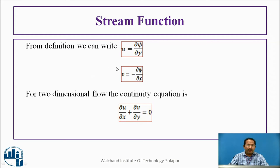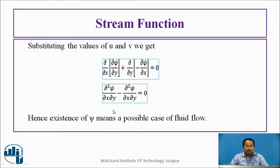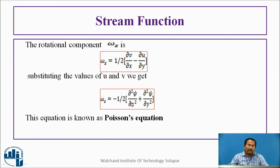From the definition, it is not a negative derivative — it is direct. That is, u = ∂ψ/∂y and v = −∂ψ/∂x. We substitute these values into the two-dimensional continuity equation: ∂u/∂x + ∂v/∂y = 0. Substituting u and v in terms of ψ, we get: ∂²ψ/∂x∂y − ∂²ψ/∂x∂y = 0. The existence of ψ means a possible case of fluid flow.